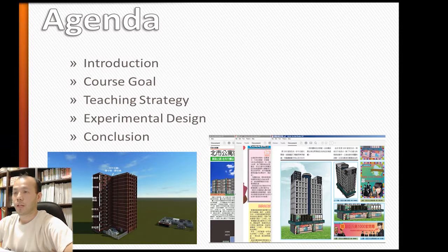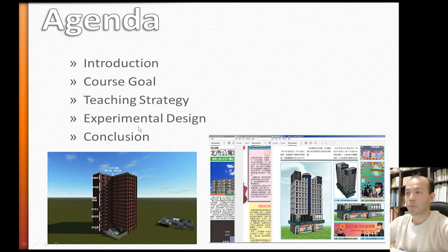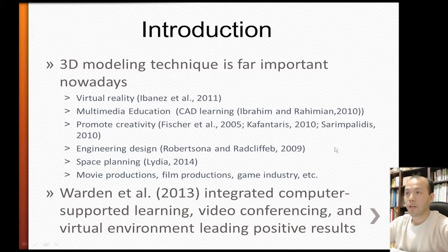Here I'll show you the agenda of this talk. First, we're going to introduce the overall work and prior works. We're going to introduce the course goal, then the proposed and designed teaching strategy will be discussed third. Finally we'll draw the conclusion. But before that, we'll show you the experimental results — the learning outcome from students who could produce real 3D objects and publish them into 2D news online.